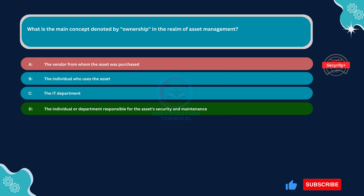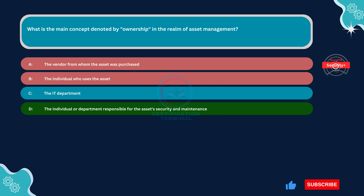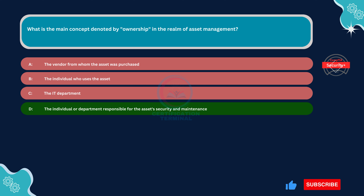Option A is incorrect. While the vendor from whom the asset was purchased is involved in the procurement process, they do not represent the concept of ownership in asset management. Option B is incorrect. While the individual who uses the asset may have a role in its utilization, ownership entails broader responsibilities such as security, maintenance, and lifecycle management. Option C is incorrect. While the IT department may be involved in managing assets, ownership typically transcends departmental boundaries and is more closely associated with responsibility and accountability for the asset's security and management.